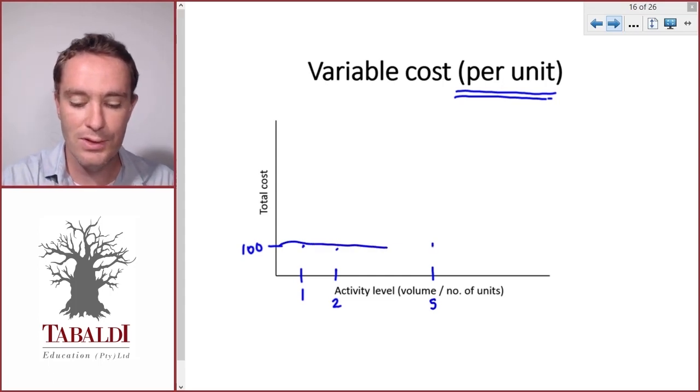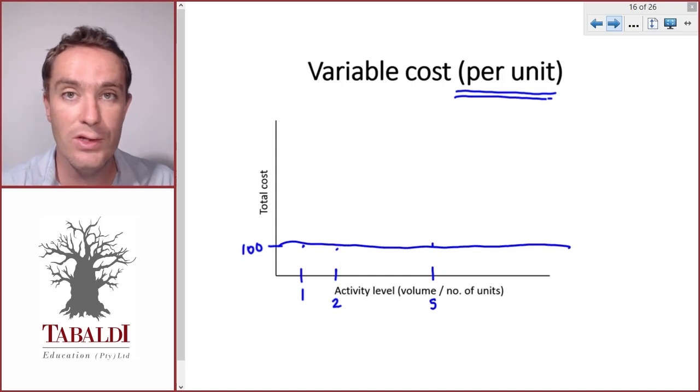So you can see a variable cost stays fixed on a per unit basis or it stays constant on a per unit basis. So it's a flat horizontal line.